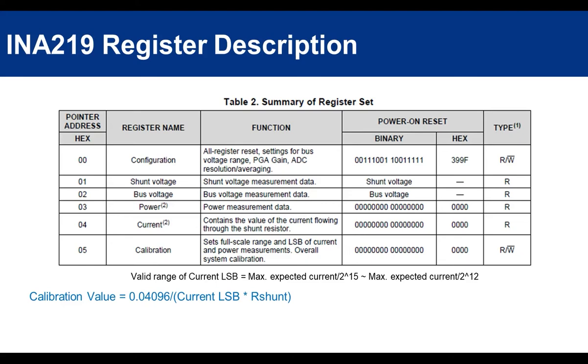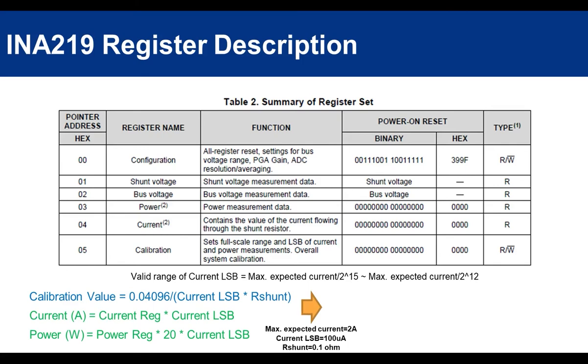After setting the calibration register, you can read the register value from the current and power register, and obtain an actual value in amperes and watts using these formulas. For example, with the maximum expected current of 2 amperes and desired resolution of the current as 100 micro amperes, each values can be calculated as shown.